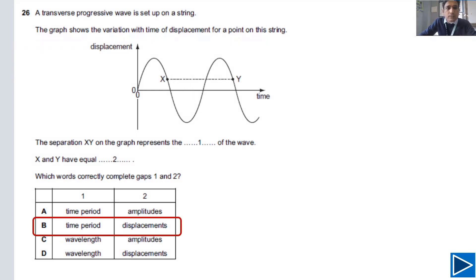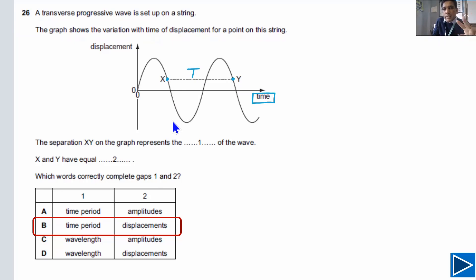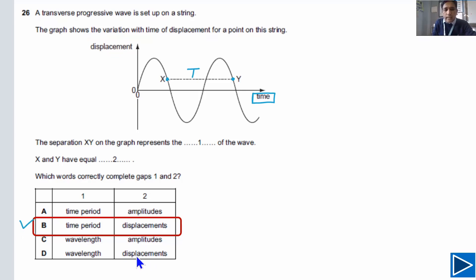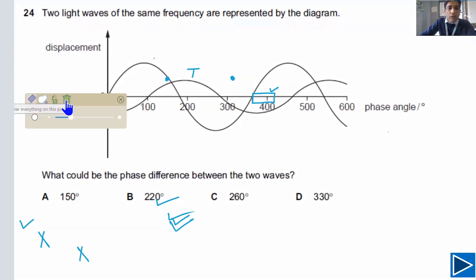The answer for the next question is B. This is a time-axis graph, so the distance between two consecutive identical points equals the time period. The second thing to identify is what is the same for two marked points — they have the same displacement. So the answer is B. Option D is not possible because wavelength refers to distance, not time, so D is ruled out.